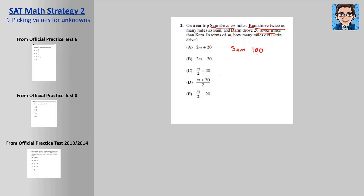Also, when you're doing percentages, 100 is a great number to work with. There are no percentages here, but if you do have a problem with percentages, I usually pick 100 because it's very easy to work with. So Sam drove 100 miles. That means Kara is driving twice as far, 200 miles. And Darren is 20 less than Kara, so 180.